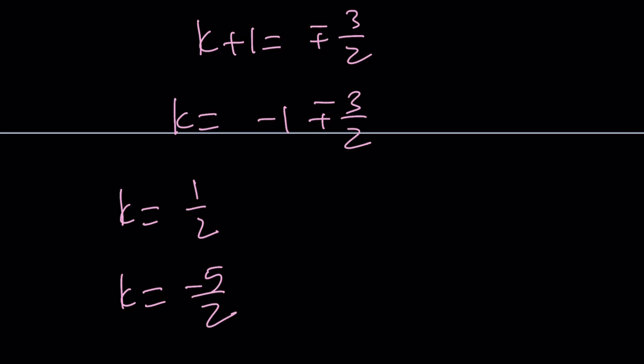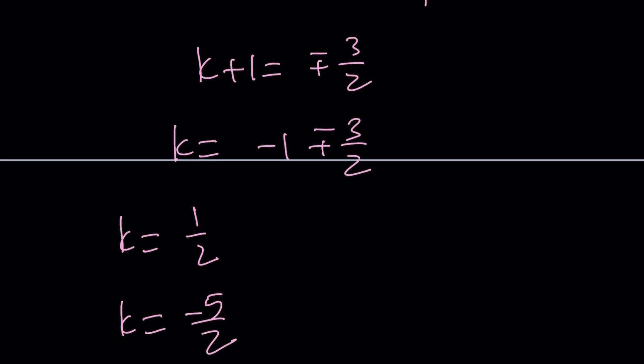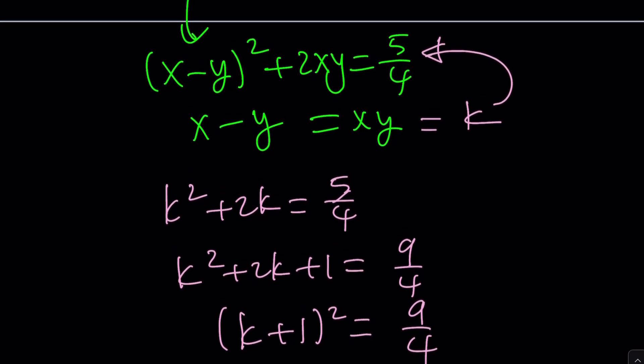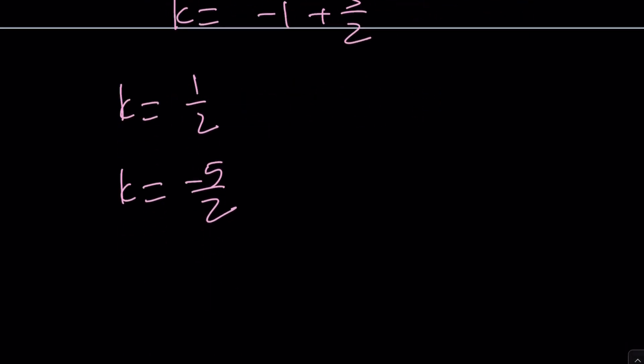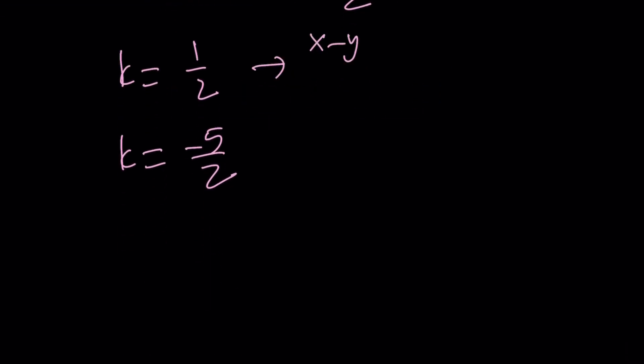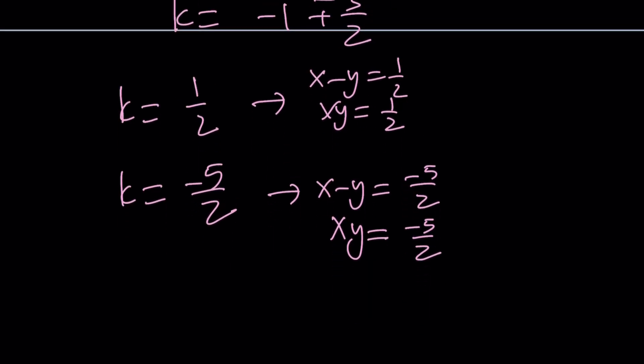Those are the k values, but what is k? Let's go back. k is x minus y or xy. In other words, the k value is going to generate a quadratic equation, because it's going to give us two equations. So in other words, if k is 1 half, we're going to get x minus y is 1 half and xy is 1 half. From here, you get a quadratic. From here, you get another quadratic. By solving these quadratics, you're going to get the solution for x and y. But of course, you're only interested in x because y is just a dummy variable.